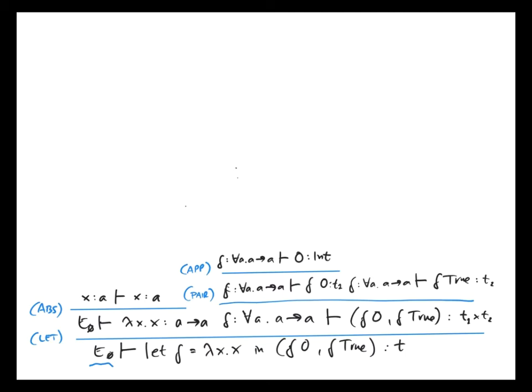How about f? This is interesting, because now we need to use the projection rule, the specialization rule. It says that if f has type for all a, a to a, then we can conclude that f also has type int to int by instantiating a with int throughout. So now we know that f has type int to int, and 0 has type int, so we now also know that t1 has type int.